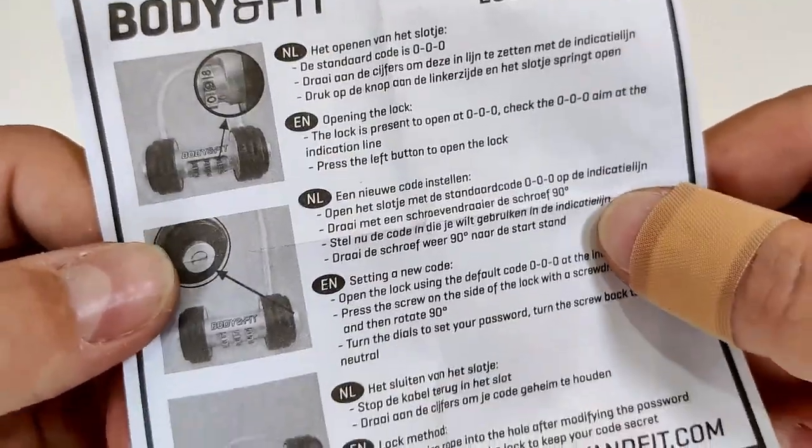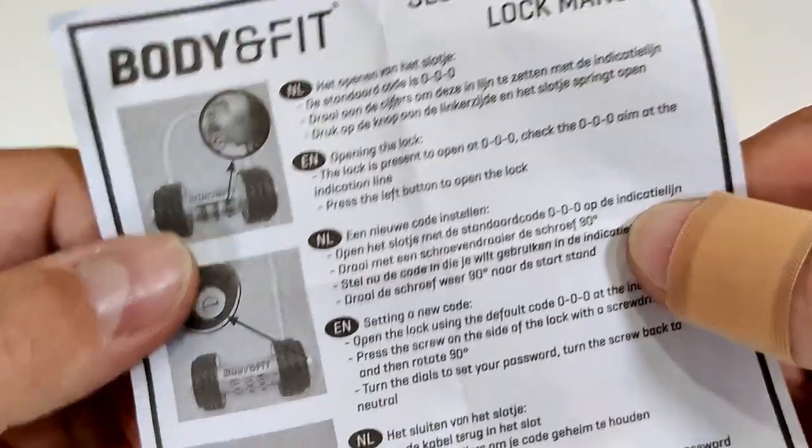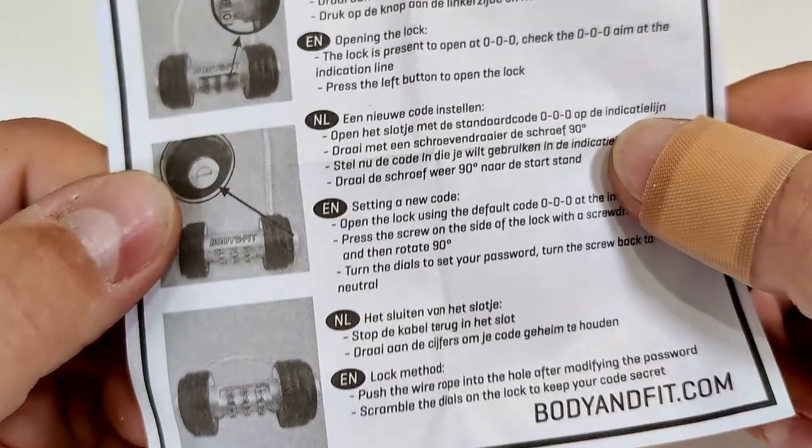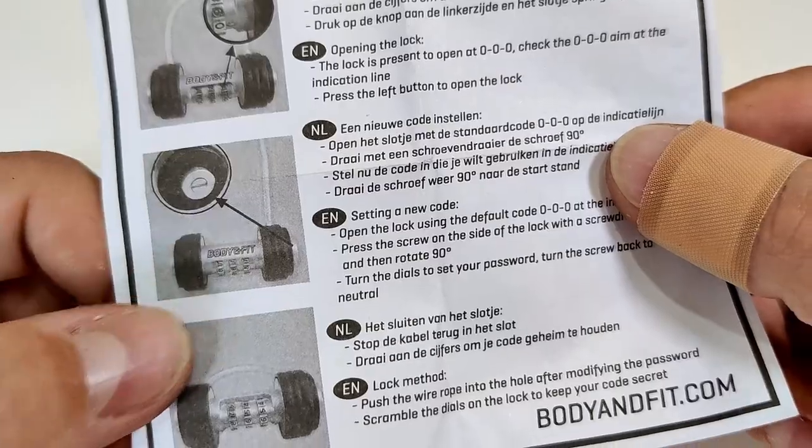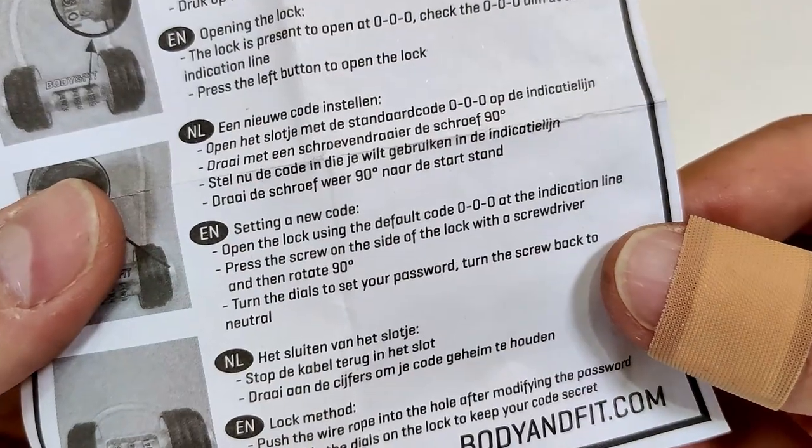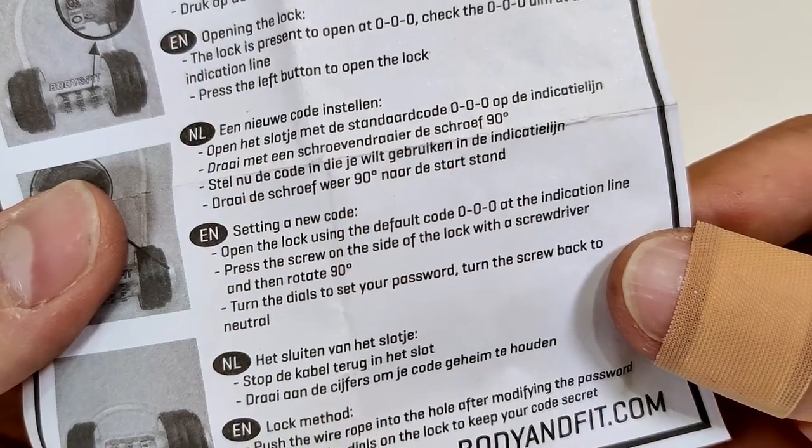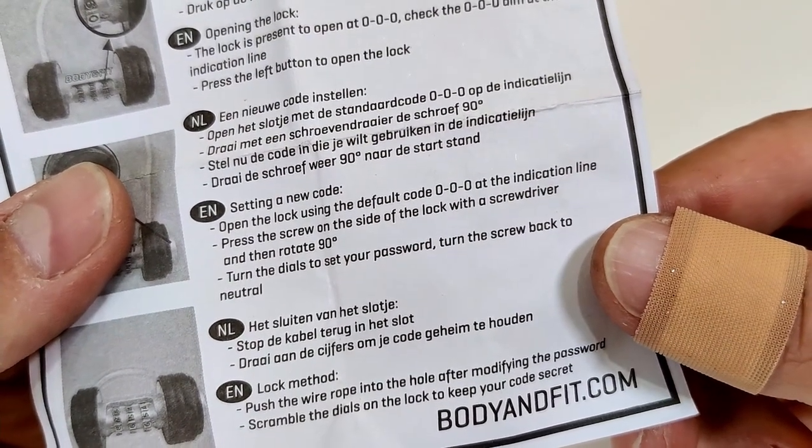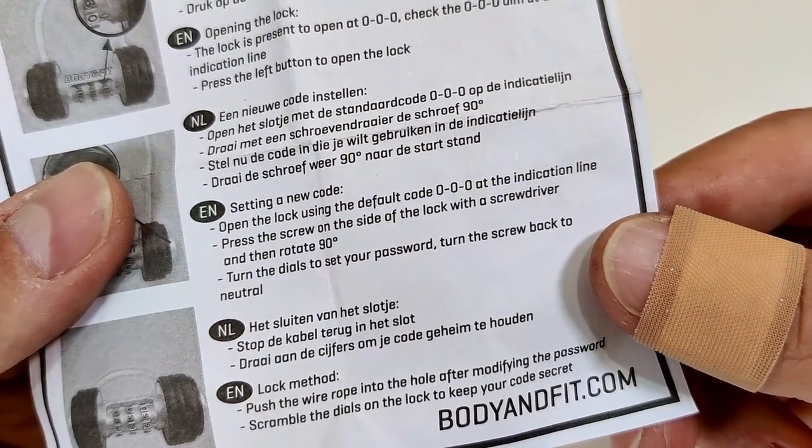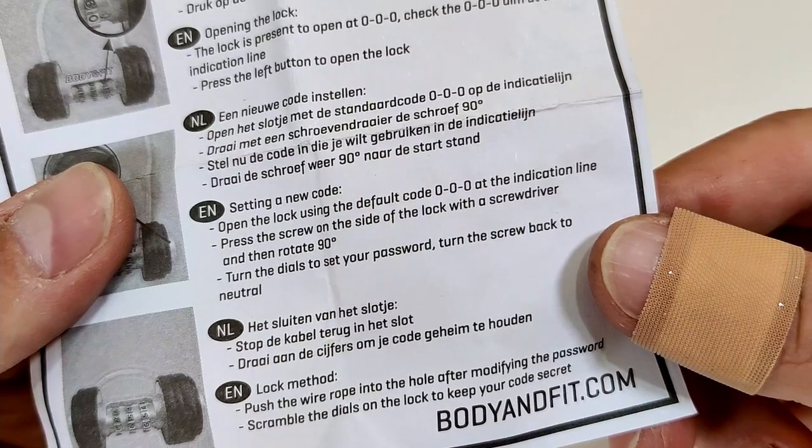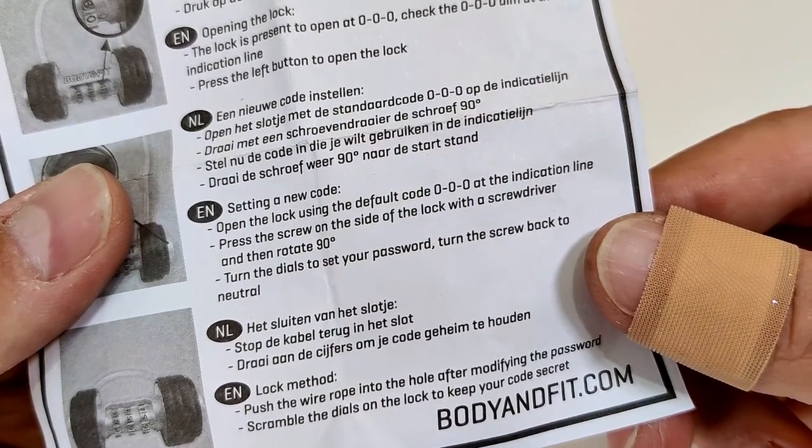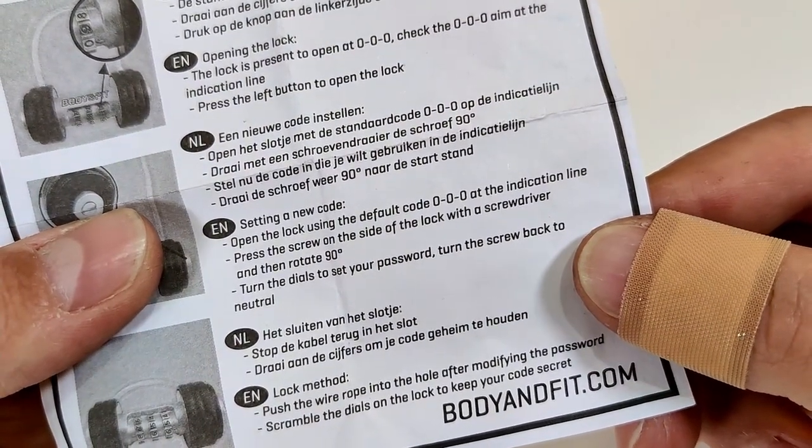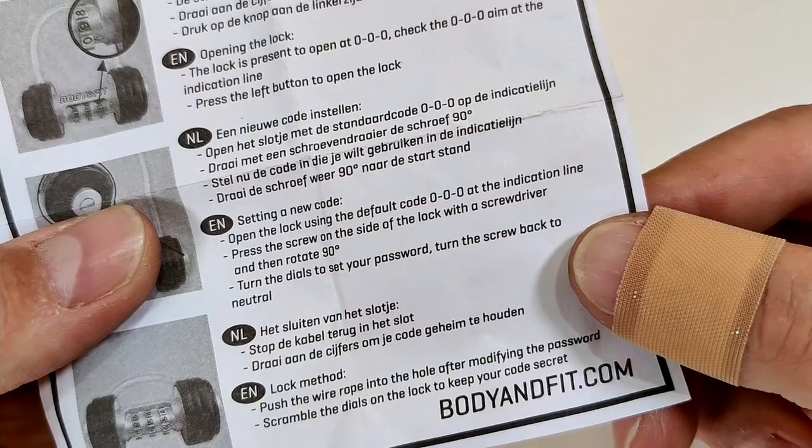Here's the instructions in English with pictures showing you need to align the numbers and how to change the combination. To set a new code, open the lock using the default code 0-0-0 at the indication line, press the screw on the side of the lock with a screwdriver and turn it 90 degrees, turn the digits to set your password, then turn the screw back to neutral.